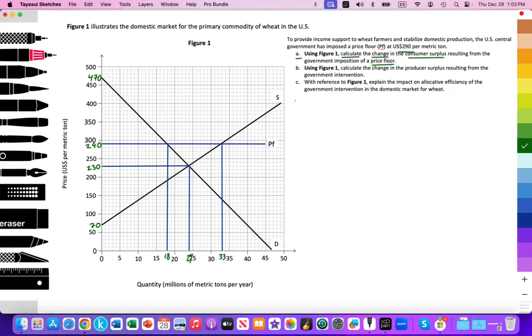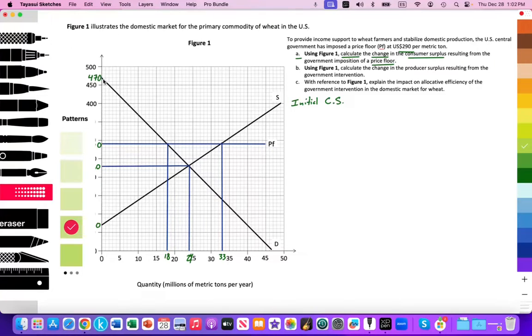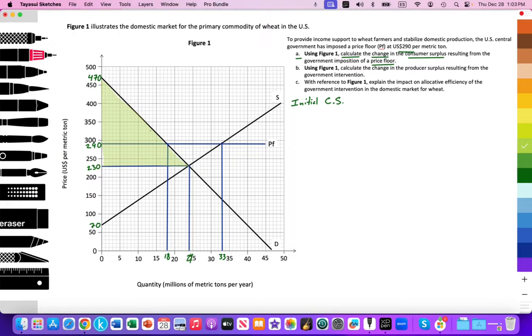So first we're going to look at the initial consumer surplus. And I want to see visually what that area looks like. So I know it's the area below the demand curve to the free market price. And I'm going to get this triangular area here that we see. So that's the surface area that I want to calculate. And we know that the surface area of a triangle is the height times the base, and we're going to divide that by two.